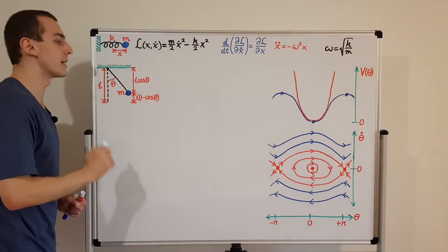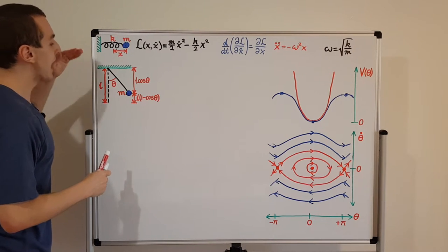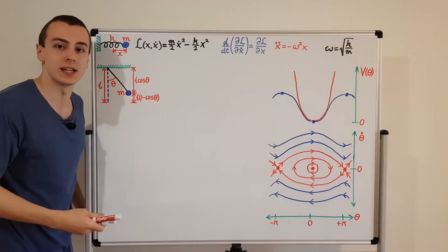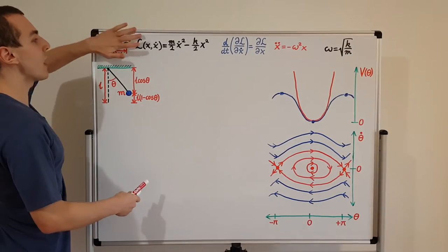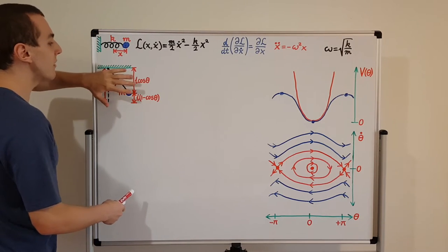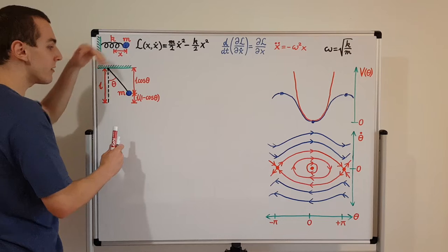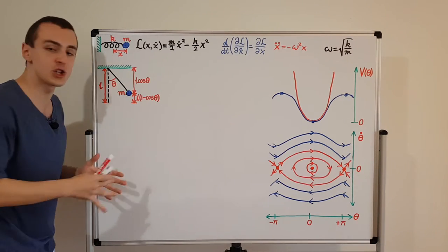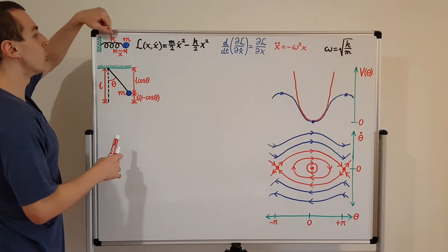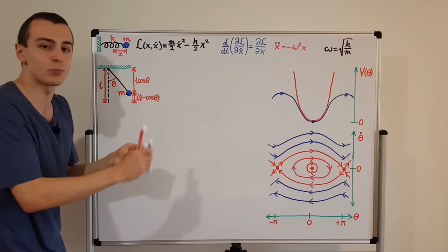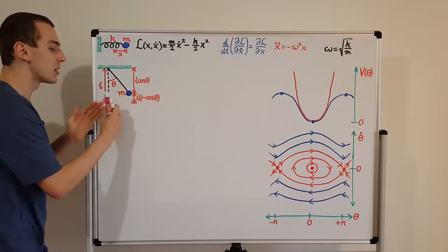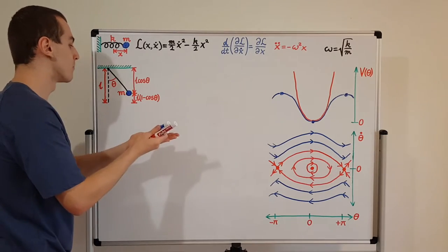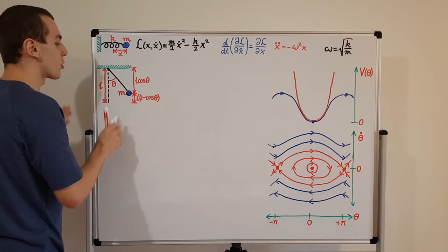Let's now look at the pendulum. Where before we had an immovable wall, now we have an immovable ceiling. We also now have the effect of gravity — a uniform gravitational field pointing downwards — so we can define a gravitational potential energy function. Whereas for the spring we had a Hookean potential stored in the spring, for the pendulum we store potential energy in the height of the object.